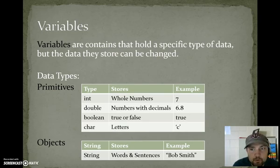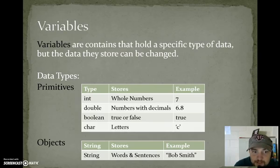Variables are containers that hold a specific type of data, but the data they hold can be changed. For example, in math you might have a variable x. x might hold 5 at one point on the line, it might hold 8. Now we're not dealing with lines, but the idea is you have a variable, something that can be changed. Its value can be mutated throughout the life of your program.